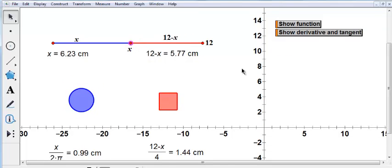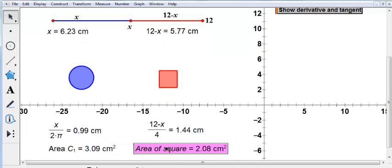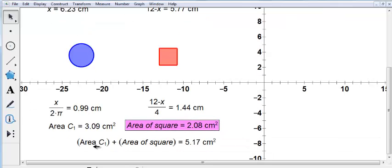So what we can do now, then, is look at, here's the area of the circle. Here's the area of the square. What I want to do is add them. The area of the circle plus the area of the square is now only 5. So you can see that breaking it apart is going to cause a minimum, because it was 11 point something here and 9 something here. And if I take the two areas, you only get 5.17.